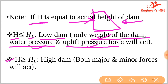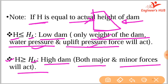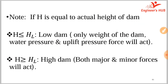If the given height of a dam is greater than the limiting height of the gravity dam, then it is classified as a high dam, and all major and minor forces act — that is, all six forces act. For a high gravity dam, the six forces include water pressure force, ice force, and wind force, among others.